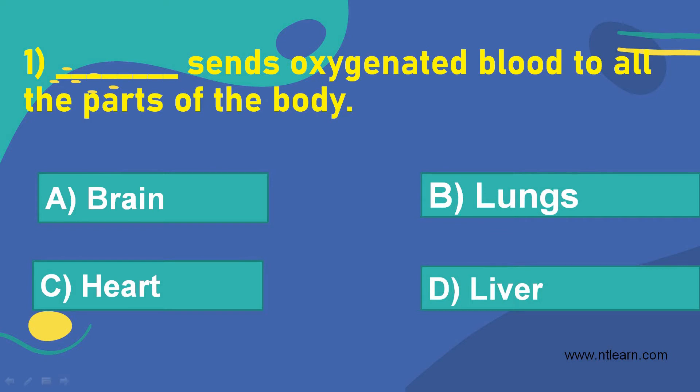Dash sends oxygenated blood to all the parts of the body. Option A, brain. Option B, lungs. Option C, heart. Option D, liver.